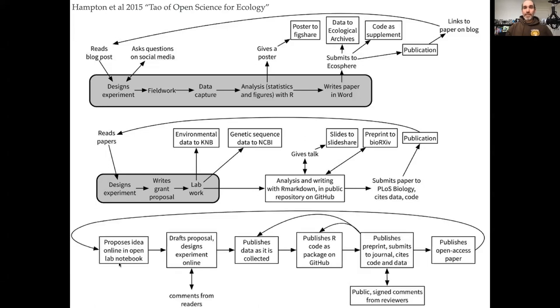And then here's a more radically open version where the proposal and proposed ideas are open. The draft proposal and the design experiment is done open and open for input. The data is published as it's collected. The code is published as it's developed. Things are put in preprints. This is the version that leads to the most opportunities for collaboration and the most transparency. But it's a pretty radical departure from how most of us are doing science right now.